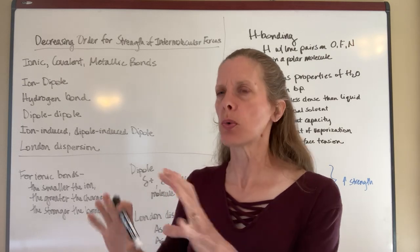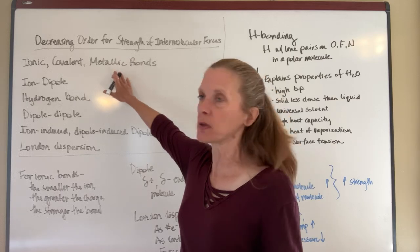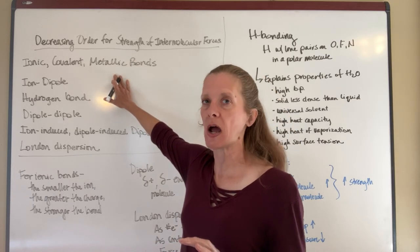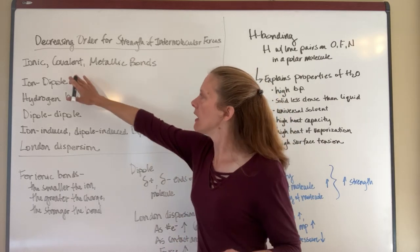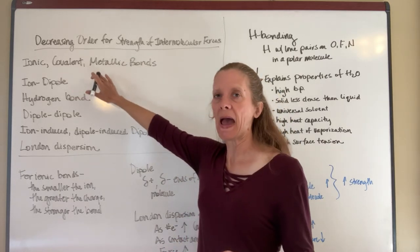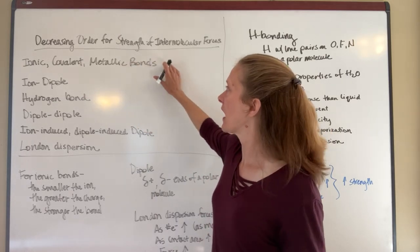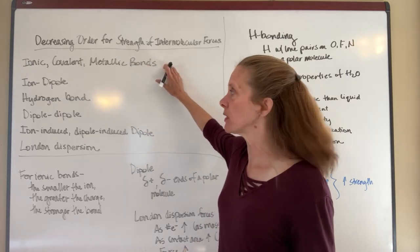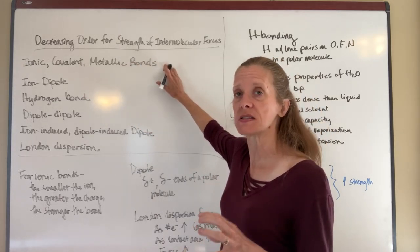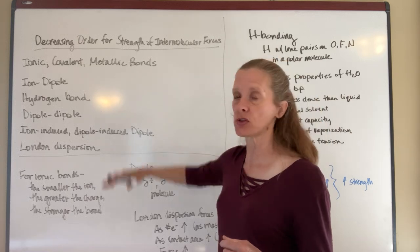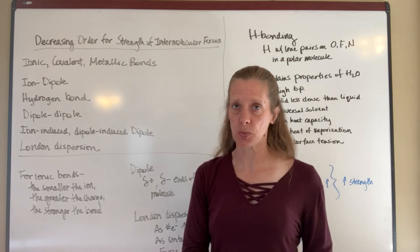We'll hit metallic bonds a little bit later in the chapter, so I'm not going to spend much time on it right now. The key point is that if you actually have a bond, that's going to take precedence — it's going to have more strength than the other intermolecular interactions.